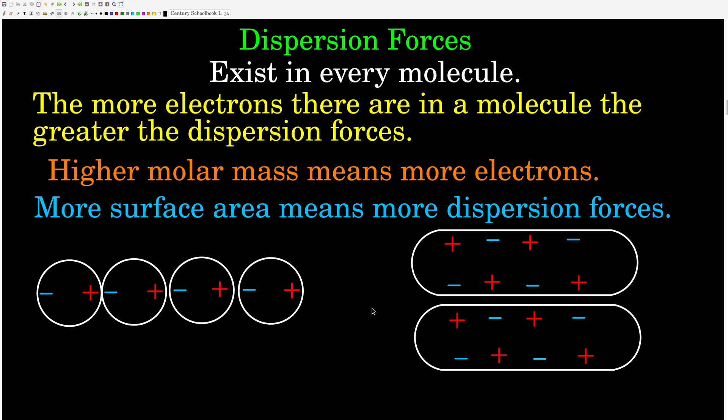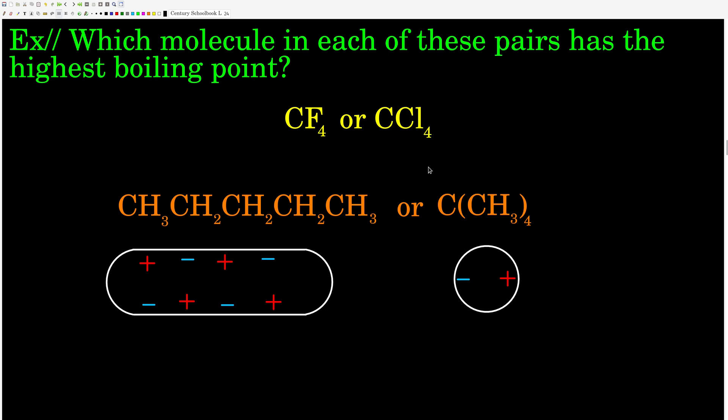Intermolecular forces influence the boiling point of a liquid. The stronger the intermolecular forces, the higher the boiling point, because the more strongly those molecules in the liquid phase are held to each other, the more energy we have to put in to pull them apart to create a gas. So the stronger the intermolecular forces, the higher the boiling point — and vice versa. Which of these — carbon tetrafluoride or carbon tetrachloride, or n-pentane versus tert-butane — do you think has the highest boiling point? Figure it out and come back.